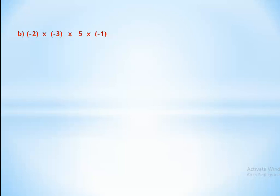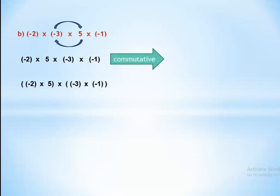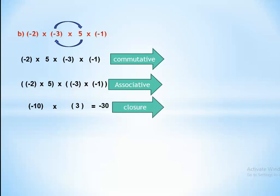For negative 2 by negative 3 by 5 by negative 1: replace the second and third numbers using commutative property, giving negative 2 by 5 by negative 3 by negative 1. Then group (negative 2 by 5) and (negative 3 by negative 1) using associative property, getting negative 10 by positive 3 equals negative 30, which belongs to Z — so we used closure.